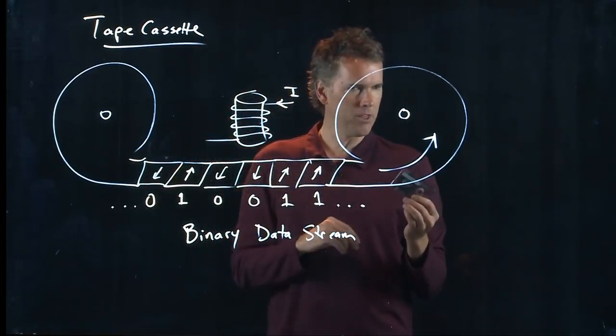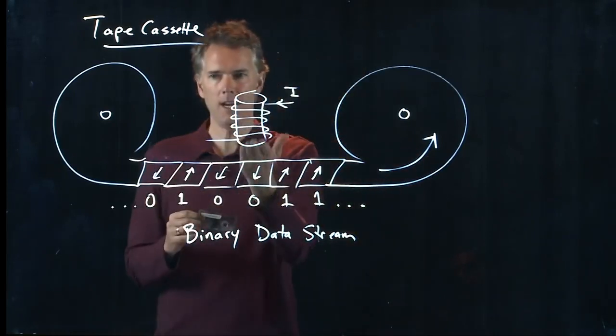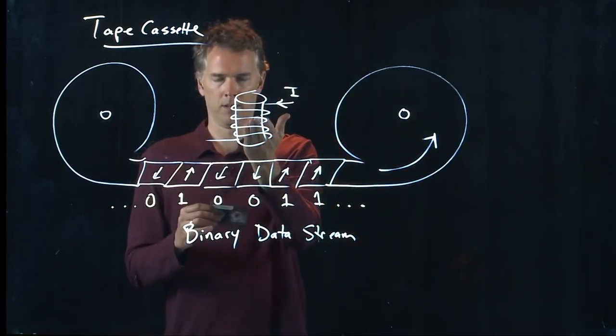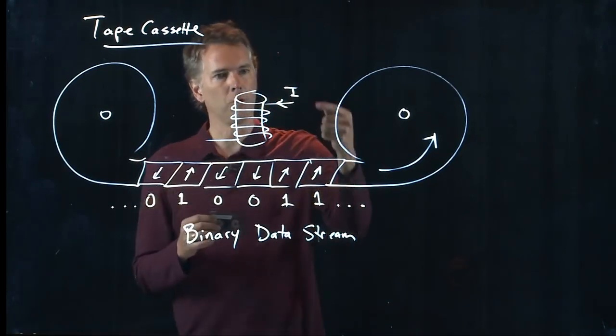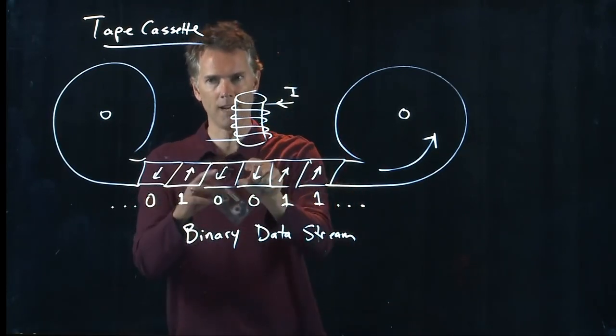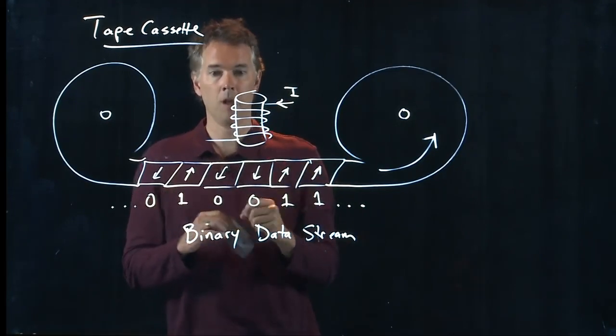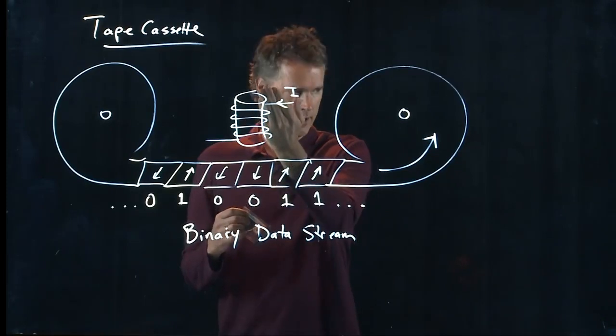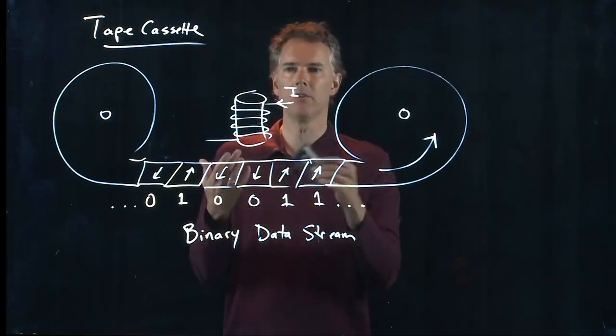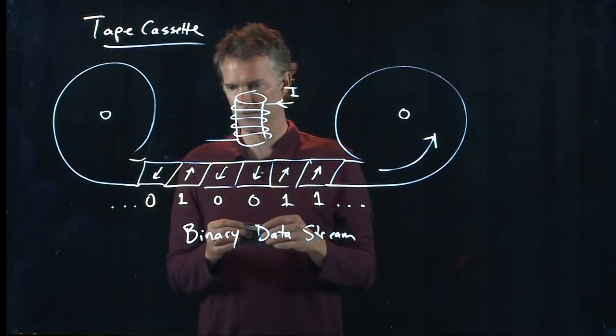But here's the really interesting thing. You can also read information. Okay. In physics, many things are reversible. So putting current in writes the information. But if I roll it past, it will generate current in the solenoid. And that's how you can read the information. All right. So this is what a tape cassette looks like.